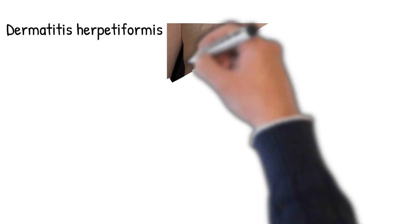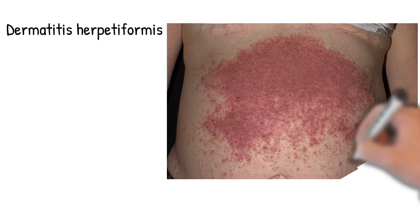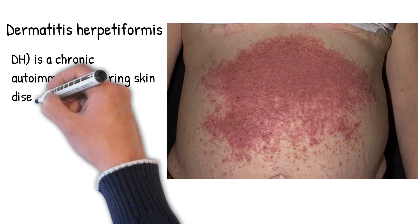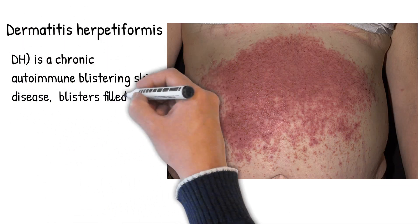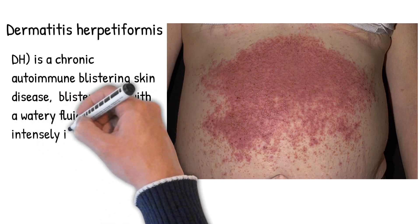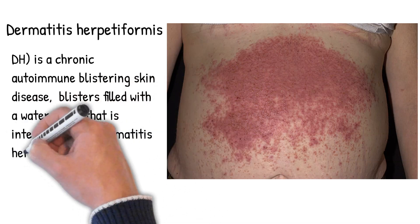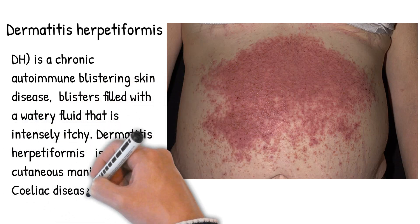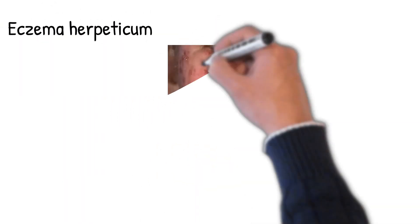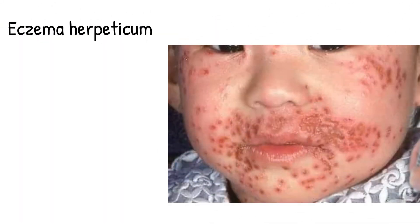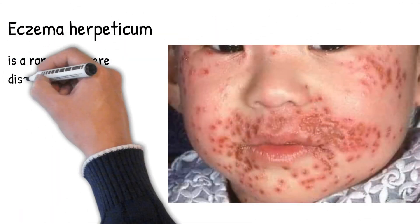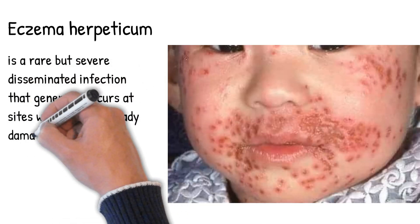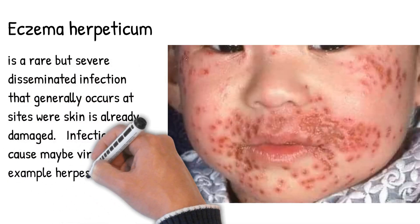Dermatitis herpetiformis (DH) is a chronic autoimmune blistering skin disease with blisters filled with a watery fluid that is intensely itchy. It is a cutaneous manifestation of celiac disease. Eczema herpeticum is a rare but severe disseminated infection that generally occurs at sites where skin is already damaged, with infection caused by viruses such as herpes simplex virus.